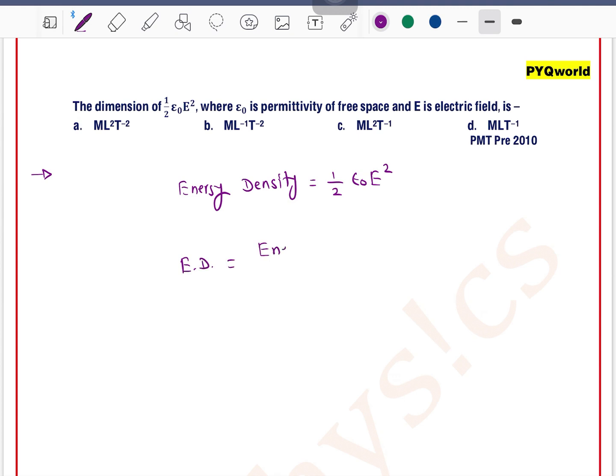Energy density can be written as energy per unit volume.